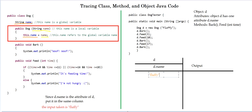Next, we have D.bark. We're calling the bark method and what this method does is print out the bark statement. Next, we have D.feed with input three. The method takes a time as input. If time is greater than or equal to 9 and less than or equal to 11, or greater than or equal to 16 and less than or equal to 18, we get the feeding output. But since three does not satisfy this condition, our output will be 'I'm not hungry.'